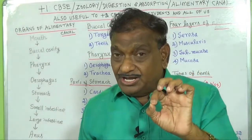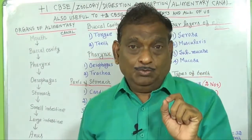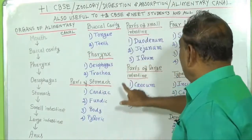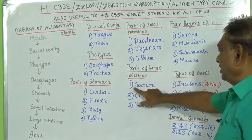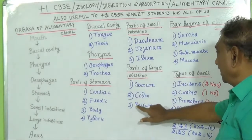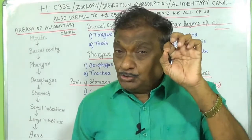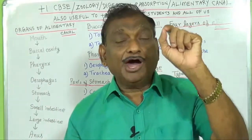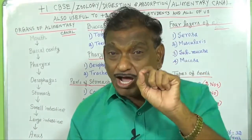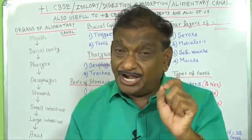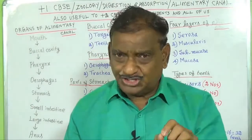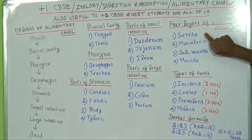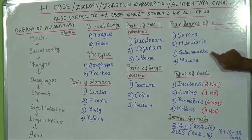In the large intestine there are 3 parts: 1. cecum, 2. colon, 3. rectum. Next, we are going to discuss the layers of the alimentary canal. There are 4 layers in the alimentary canal: 1. serosa, 2. muscularis, 3. submucosa, 4. mucosa.